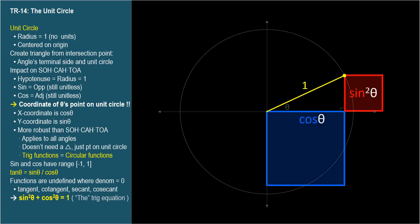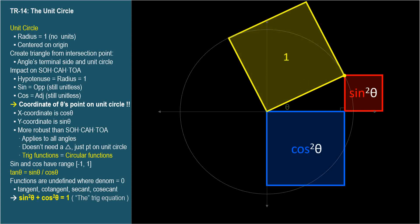Sine squared theta plus cosine squared theta equals one. The terms look a little strange. When we square a trig function, we put the exponent, or index, two between the function name and the angle argument. And we say squared in between them two. Sine squared theta means sine theta times sine theta. And sine squared theta plus cosine squared theta equals one is the Pythagorean identity for obvious reasons.